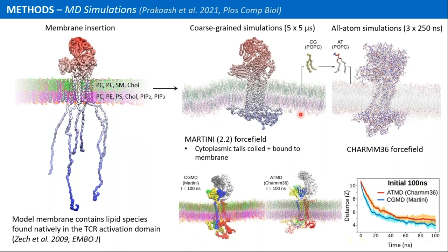Using this setup, we conducted coarse-grained simulations — five replicates of five microseconds each — and observed that the tails associated with the membrane. Using the final snapshots, we conducted atomistic simulations for 250 nanoseconds in three replicates. To check for bias from the coarse-grained simulations in membrane association, we also conducted atomistic simulations from the very beginning of the simulations and compared results between coarse-grained and atomistic, finding them consistent, confirming no artifacts in protein-protein interactions or membrane association.